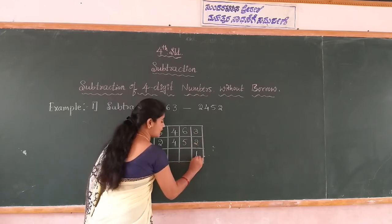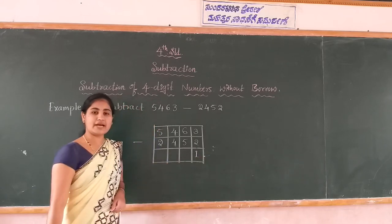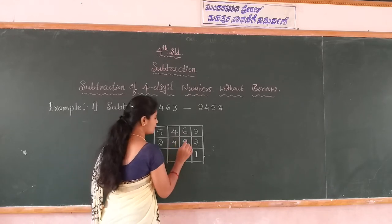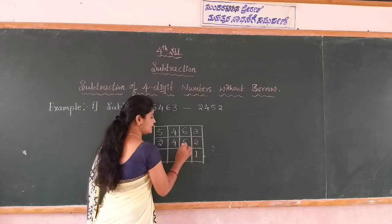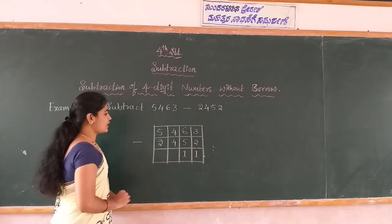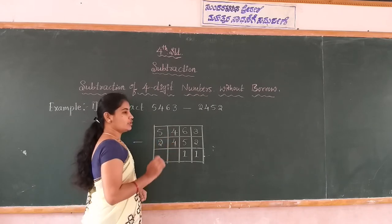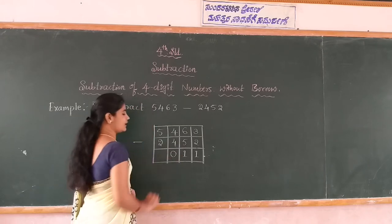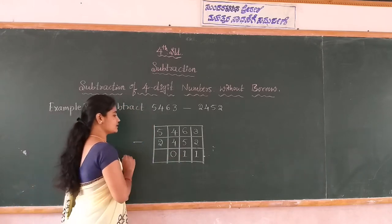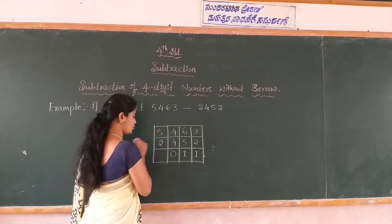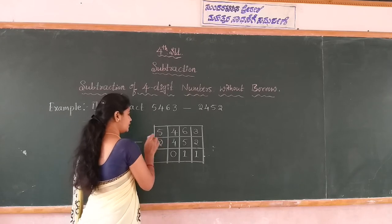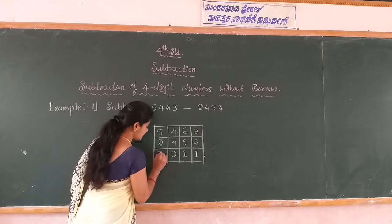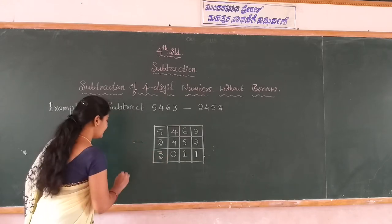In addition you start with the ones place, and in subtraction also you start from the ones place. 3 minus 2 is 1. Next, 6 minus 5 is also 1. Then 6 minus 4 is 1. Next come to the hundreds place: 4 minus 4 becomes 0. Then come to the thousands place: 5 minus 2 — not 2 minus 5 — 5 minus 2 is 3. This result is called the difference.